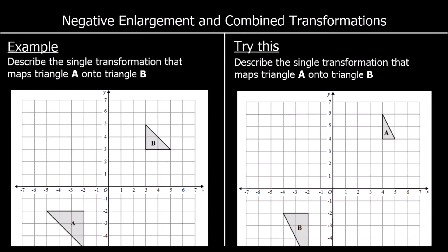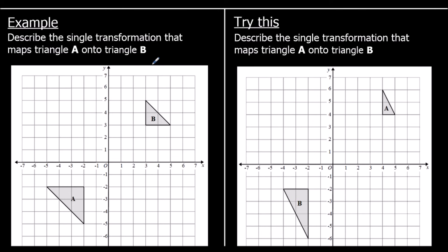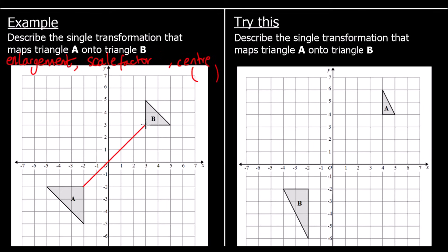Here we have a different question — this time we need to describe a transformation. The first question says: describe the single transformation that maps triangle A onto triangle B. We can see it's an enlargement and we can see the sides have changed. So it's an enlargement — we also need to give the scale factor and the centre of enlargement. If we join up each point on triangle A with the point it goes with on triangle B, we can find the centre. They all cross at (1, 1), so the centre is at (1, 1).